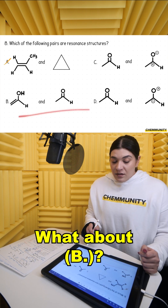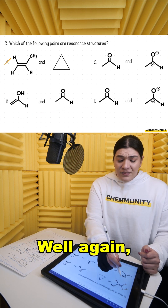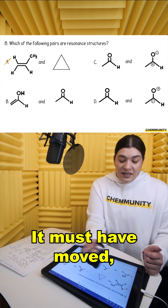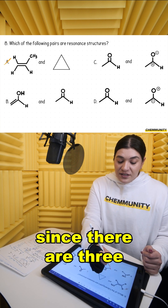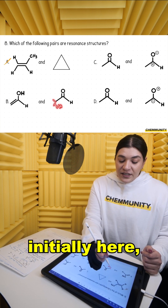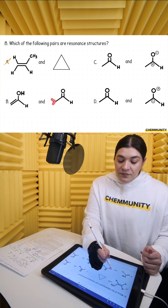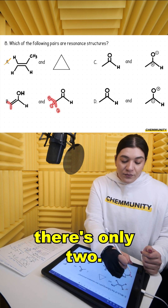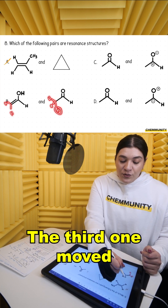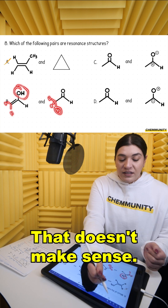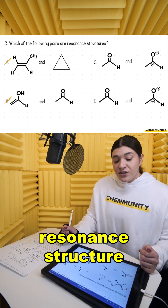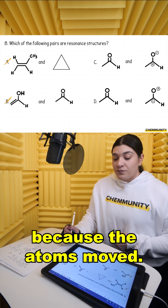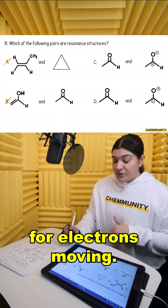What about B? Again, how did we gain that hydrogen there? It must have moved since there are three initially here, and now there's only two. The third one moved up here. That doesn't make sense — that's not a resonant structure because the atoms moved. We're only looking for electrons moving.